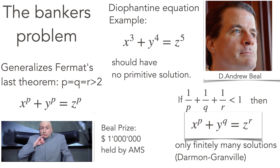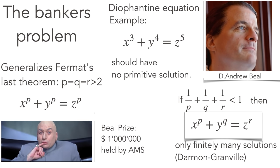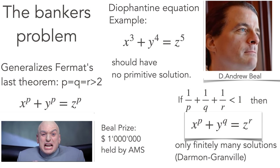If one over p plus one over q plus one over r is smaller than one, then there are only finitely many solutions. This has been proven and a banker Andrew Beal has given one million dollars for the solution of this problem. The Beal prize is held by the AMS. One million dollars.